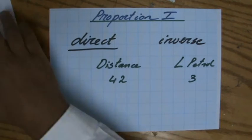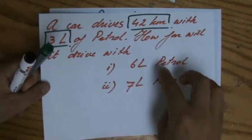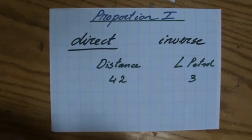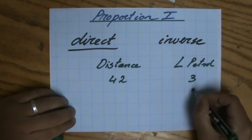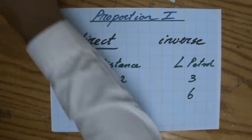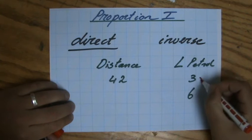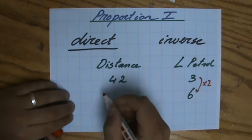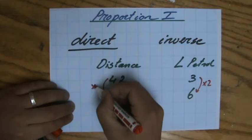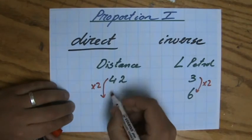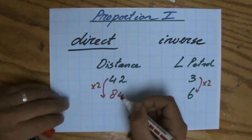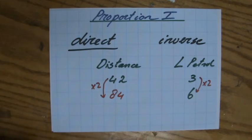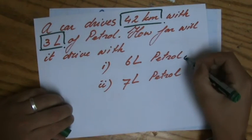Now the question is, how far will it drive with 6 liters of petrol? So the petrol here goes to 6, and then I ask myself, how many times more is that? Well, that's twice as much. So direct proportion, 42 also becomes twice as much. The answer will be 84. With 6 liters of petrol, you can drive 84 kilometers.